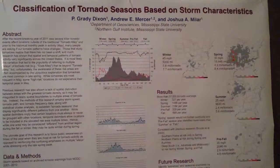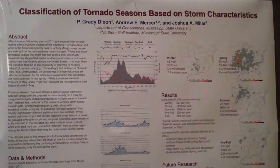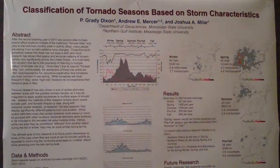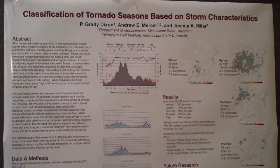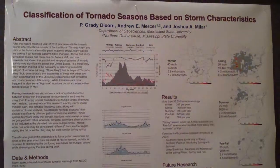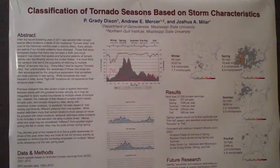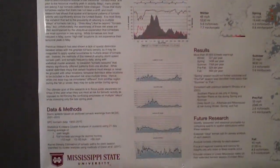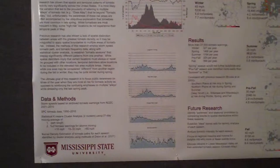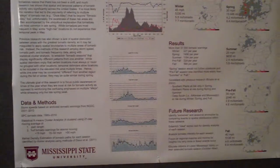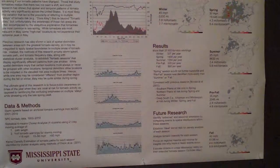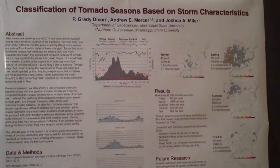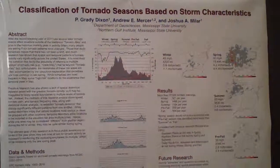The big take-home message here is that storm speed changes dramatically from the fall and winter seasons to the spring and summer, and that lots of high tornado activity areas in the southeast have one long season beginning around October and stretching through the month of May.